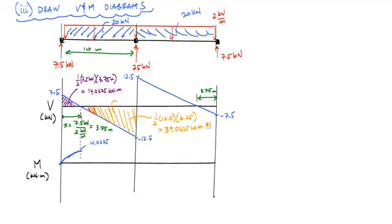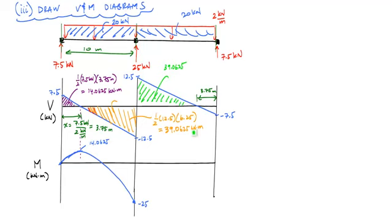The change of 39.0625 kN·m takes the moment down to negative 25 kN·m at B. Then on the second span, the same positive area of 39.0625 brings the moment back up to 14.0625 kN·m, then decreasing to zero at C. The moment diagram looks symmetric, which makes sense given the symmetric loading and reactions. The slope of the moment diagram at A is 7.5, going to zero at the local max, consistent with a parabolic shape.